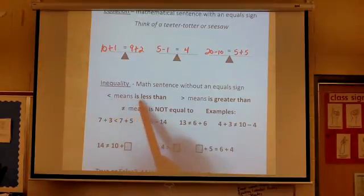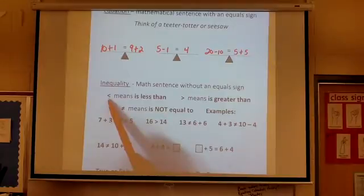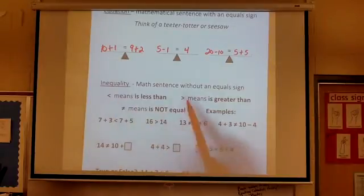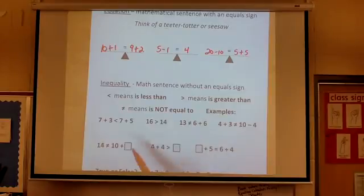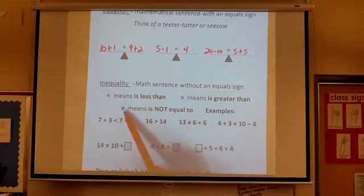This one means is less than. When you're reading it left to right and you arrive at this symbol, that's what you say, is less than. This one's the opposite, it means is greater than. And the equal sign with the slash through it means it is not equal to.